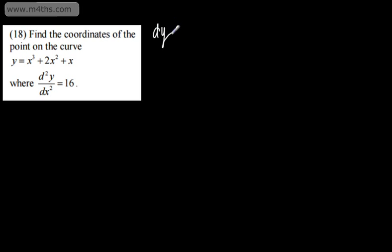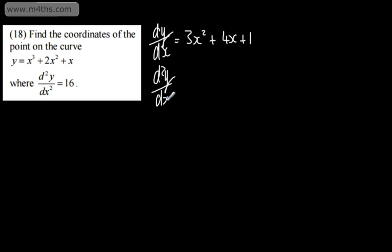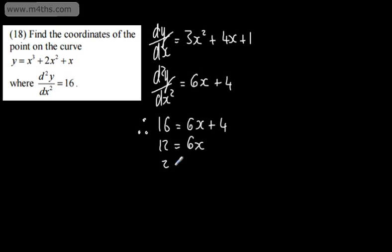Question 18: find the coordinates of the point on the curve y equals x cubed plus 2x squared plus x where d²y/dx² equals 16. We differentiate once: dy/dx equals 3x squared plus 4x plus 1. Differentiating again: d²y/dx² equals 6x plus 4. Setting 6x plus 4 equal to 16 gives 12 equals 6x, so x equals 2.